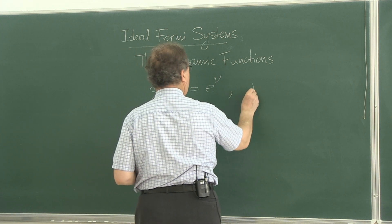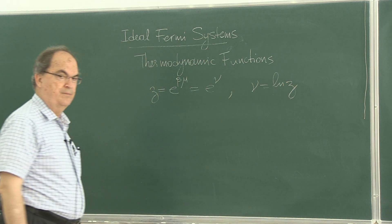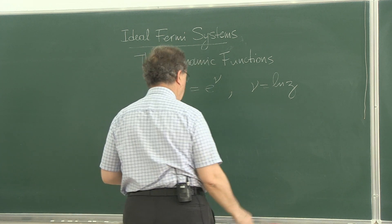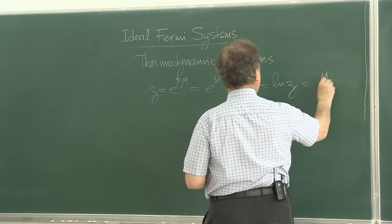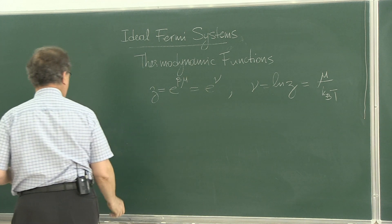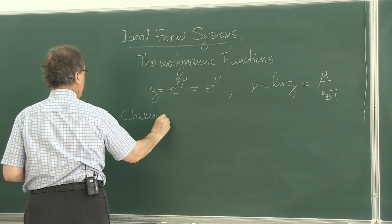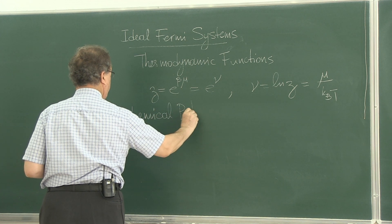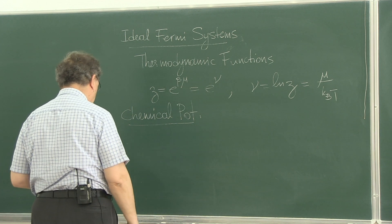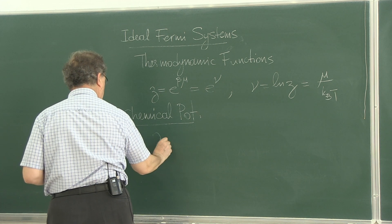So, mu is ln z. If you take logarithm of both sides, that's what you find, which is mu over kB T. So, the chemical potential then, you can use this.